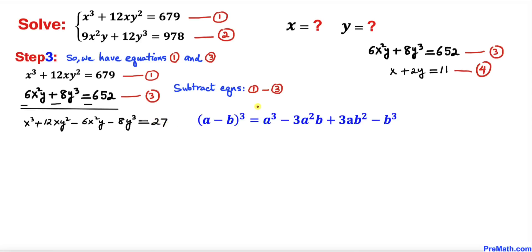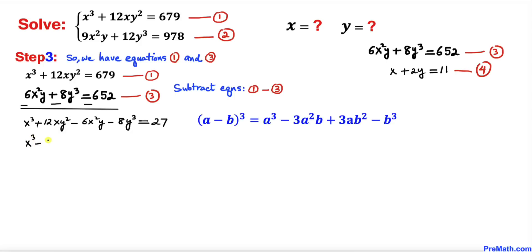Let's recall the cubic identity (a − b)³. We are going to manipulate the left-hand side to apply this cubic identity. First let's rearrange the terms: x³ − 6x²y + 12xy² − 8y³ = 27.